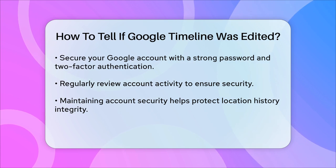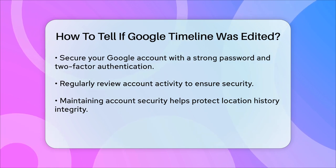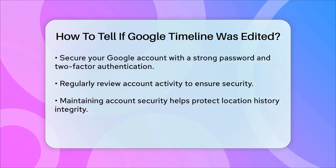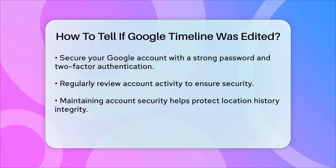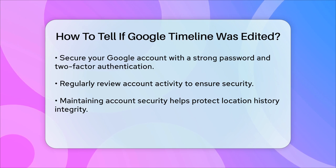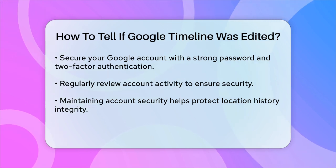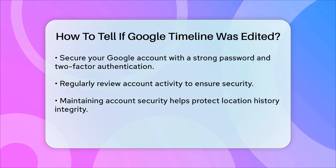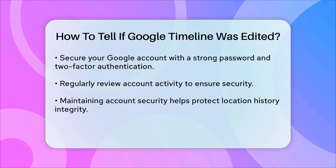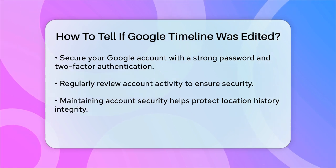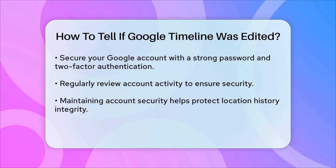In summary, to tell if your Google Timeline was edited, look for edited labels on location entries, check the details of each entry for changes, and review your account's activity log. Keeping your account secure is key to maintaining the integrity of your location history.